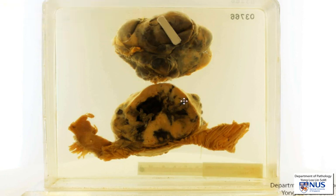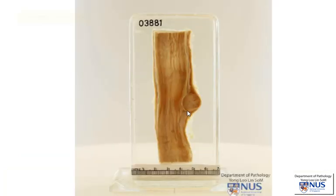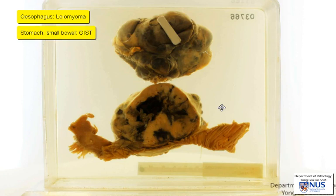There are several types of stromal or mesenchymal tumours that can occur in the wall of the gut, but the likelihood of the type of tumour depends very much on the location. For example, in the esophagus, the commonest mesenchymal tumour is a smooth muscle tumour, usually benign, hence a leiomyoma. In the stomach and in the small bowel, it is more likely to be a GIST or gastrointestinal stromal tumour. Another differential diagnosis is a peripheral nerve sheath tumour such as a schwannoma. So the three main differentials are smooth muscle tumours, GISTs, and schwannoma.